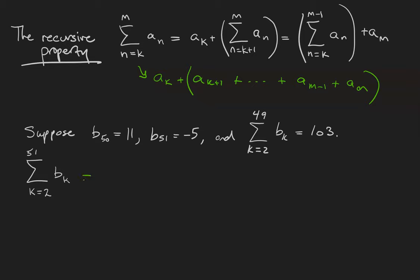Well, I can rewrite this as the sum from 2 to 49 of the b_k's, which is the one that I know the value of, plus b_50 plus b_51.